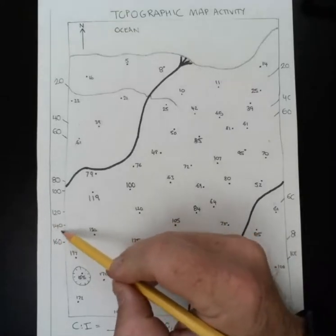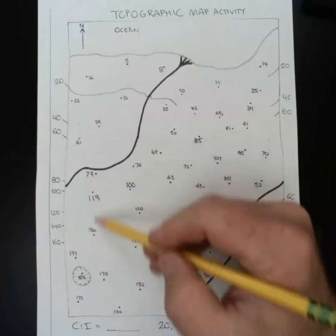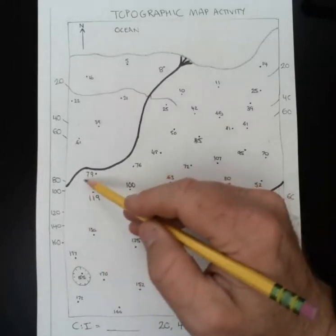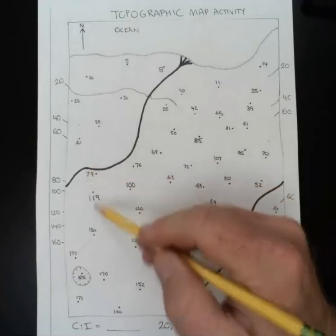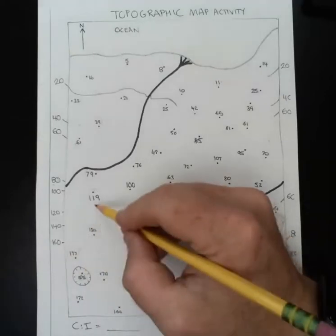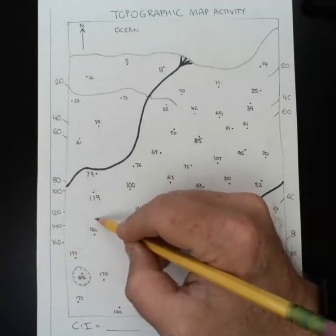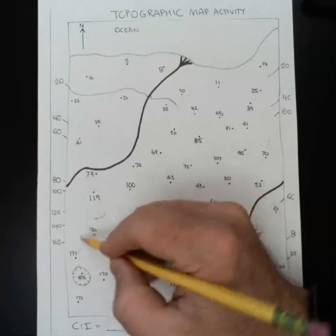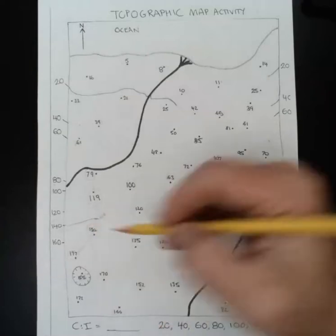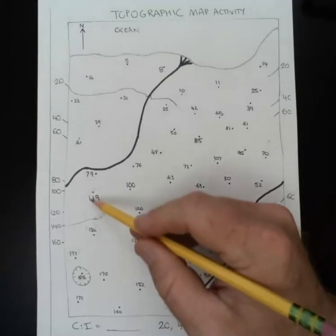The next contour line is 140 feet. Now again I'm looking at where this lies based on the elevation given around it. To figure out where that contour line is going to go, the direction basically following the contour of the land or surface, find where 140 is between the numbers given. So 119 to 150. I'm looking at 140 being closer to 150 and then drawing that, basically connect the dots and draw that contour line.